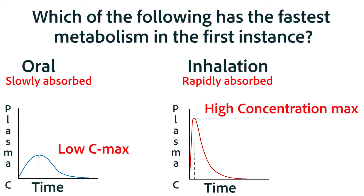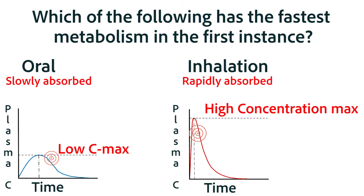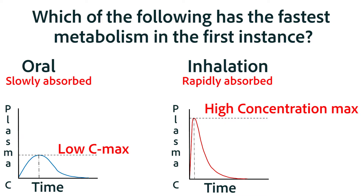Another thing to note with these graphs is the speed at which the drug is metabolized and eliminated from the system, especially in the first instance when that concentration is the highest. Take a look at these graphs and consider which one you think has the steepest fall in drug concentrations, and what you think that means about the metabolism of drugs.